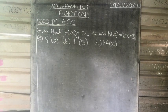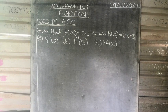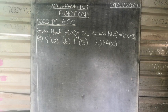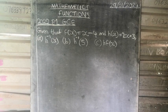Given that f of x equals x minus 4 and h of x equals 2x plus 3, we have three parts to solve: Part A, find h inverse of x. Part B, find h inverse of 5. Part C, find h of f of x.